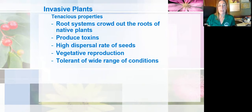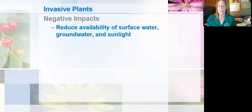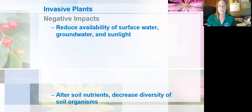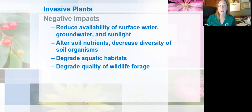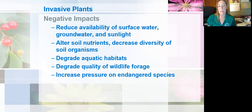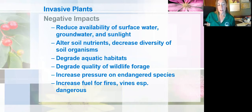The negative impacts of invasive plants include reducing the availability of water and sunlight to our native plants. They can alter soil nutrients, the pH, and decrease the diversity of soil organisms. They can degrade aquatic habitats and the quality of wildlife forage, which in turn increases pressure on already stressed species. Endangered species already have problems just trying to survive, but if their food is overtaken by something invasive, they can quickly become even more at risk. Sometimes invasive plants can increase fuel for fires — especially vines, as fire would spread very rapidly from the ground to the canopy.